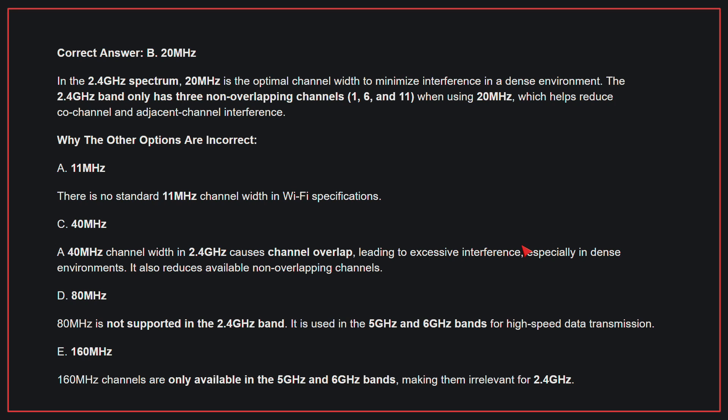Why the other options are incorrect: A, 11MHz. There is no standard 11MHz channel width in Wi-Fi specifications. C, 40MHz. A 40MHz channel width in 2.4GHz causes channel overlap, leading to excessive interference, especially in dense environments; it also reduces available non-overlapping channels. D, 80MHz. 80MHz is not supported in the 2.4GHz band; it is used in the 5GHz and 6GHz bands for high-speed data transmission. E, 160MHz. 160MHz channels are only available in the 5GHz and 6GHz bands, making them irrelevant for 2.4GHz. Therefore, the correct answer is B: 20MHz.